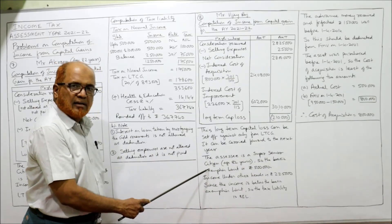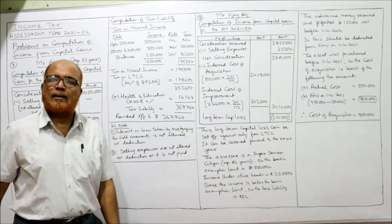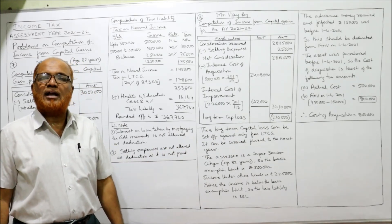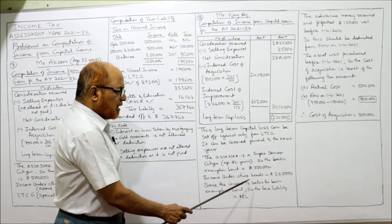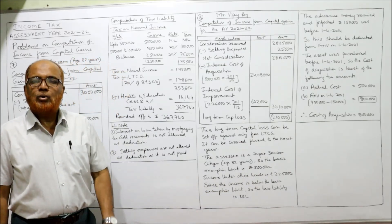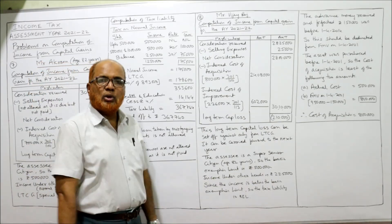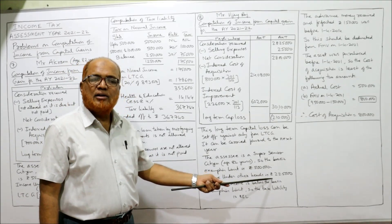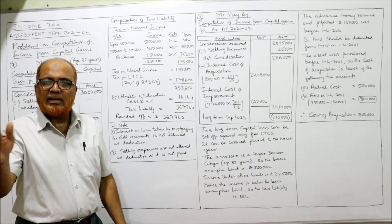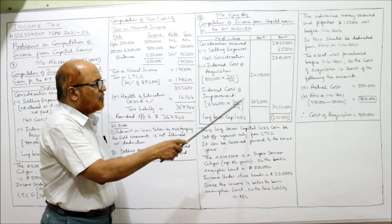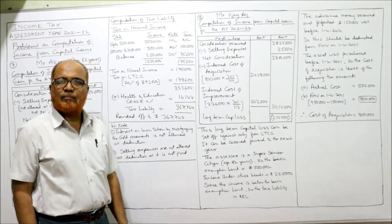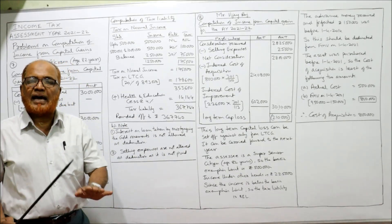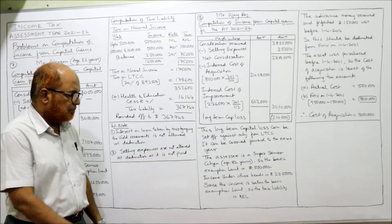Mr. Vijay Raj is a super senior citizen, age 82 years, so the basic exemption limit is 5 lakh. Apart from this capital loss, his income under other heads is 2 lakh 25 thousand — which is below the 5 lakh basic exemption limit. So 2 lakh 25 thousand is also exempted, and the tax liability is nil. No tax for this SSC because he has a long-term capital loss and his other income is below the basic exemption limit.